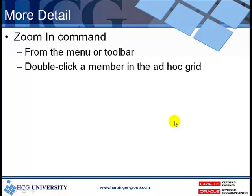The first thing we're going to do is get more detail in our report via the Zoom-in command. The Zoom-in command does just as its name implies — it gives you more detail, zooming into a lower level of detail within the hierarchy of a dimension. You can use the Zoom-in command from the menu, or simply double-click a member in the ad hoc grid.